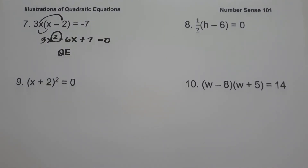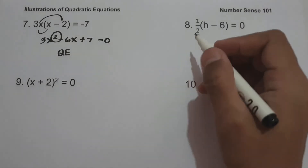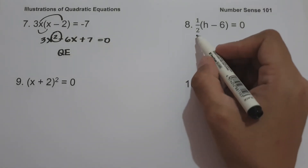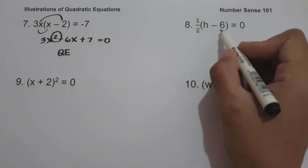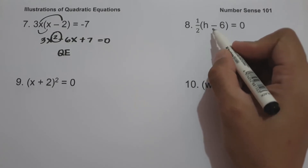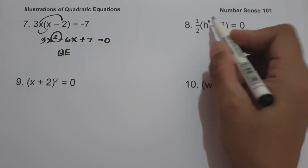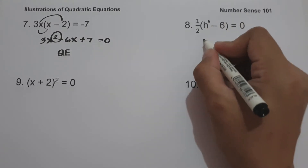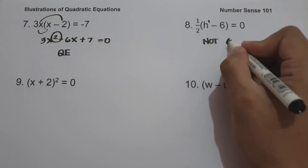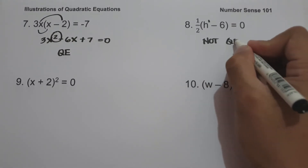On number eight, we have one-half times the quantity (h minus 6) equals zero. If you multiply one-half by (h minus 6), the highest exponent is still one, so this is not a quadratic equation.